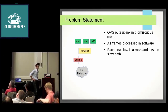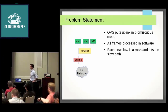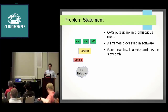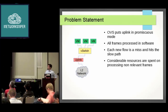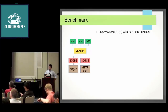The slow path in OVS has been slow, but it has been improved dramatically. Multi-threading helped a lot, and MegaFlows helps a lot as well. I don't have numbers yet on MegaFlows, but as Jesse pointed out, that seems to have solved a lot of the problems already. But considerable resources are still spent on processing flows that are not really relevant to the virtual switch.